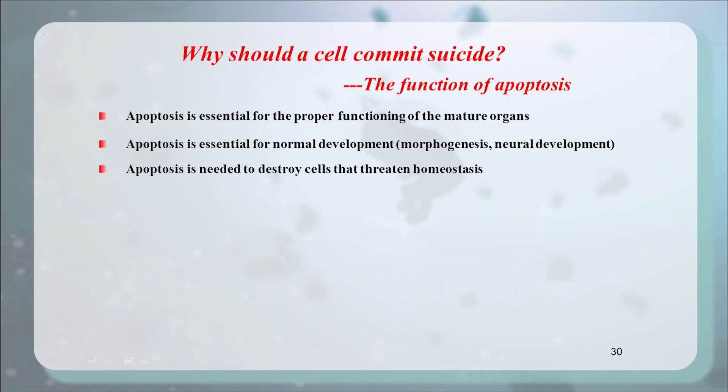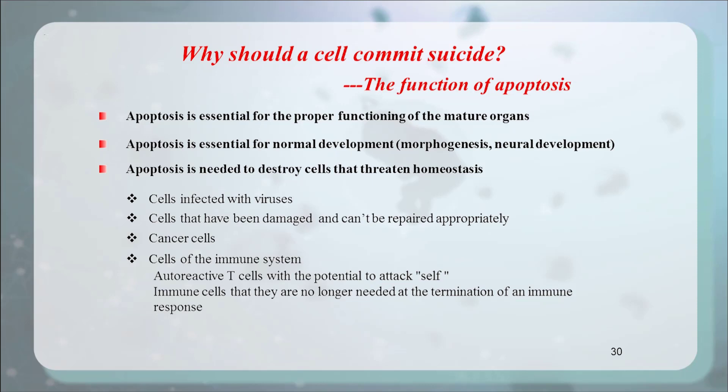The third function is that apoptosis is needed to destroy cells that threaten homeostasis. Which kinds of cells can threaten homeostasis? Cells infected with viruses, cells that have been damaged and can't be repaired appropriately, cancer cells, and cells of the immune system — including auto-reactive T cells with the potential to attack the body itself, and immune cells that are no longer needed at the termination of an immune response. If not removed, these auto-reactive T cells will cause autoimmune disease.